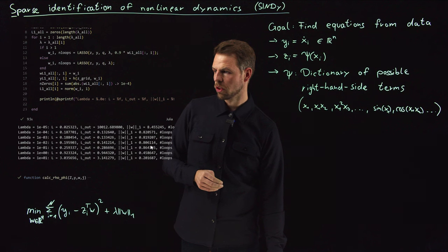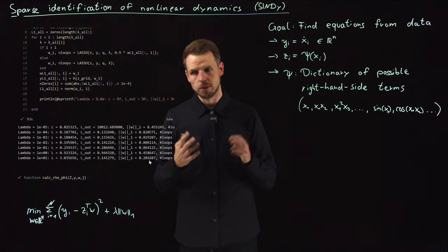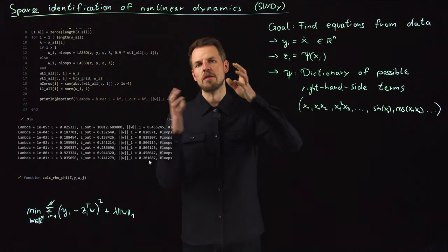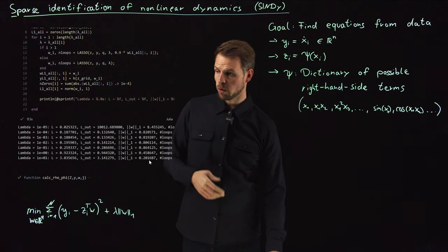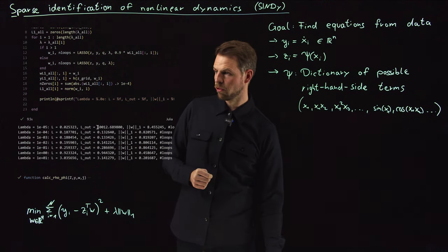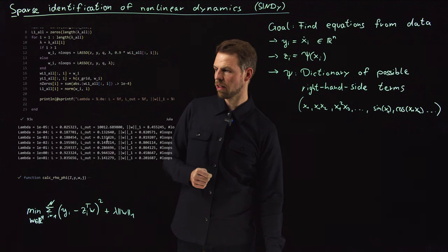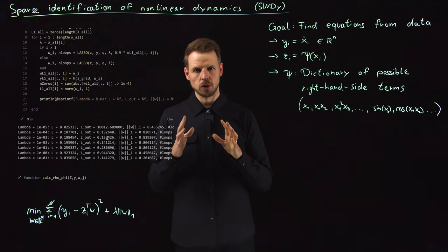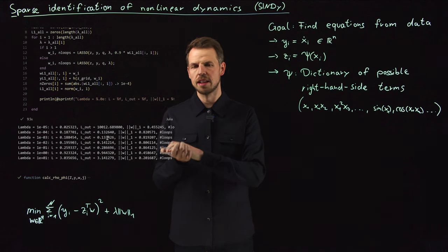On the other hand, you see that the one norm goes down, which also makes sense because with increasing lambda, you put more emphasis on this, this one should become smaller. But what's interesting is the out of sample performance has a sweet spot somewhere in the middle. So clearly there is a good place where to select the lambda.